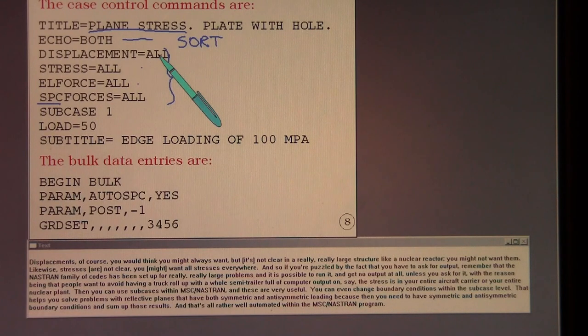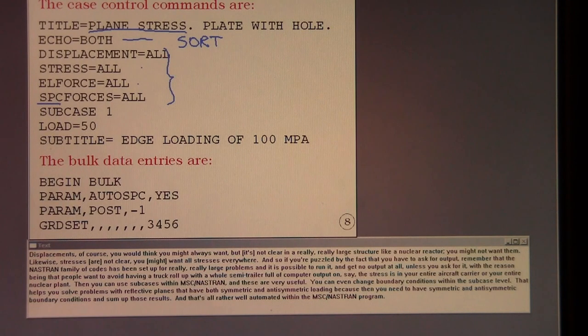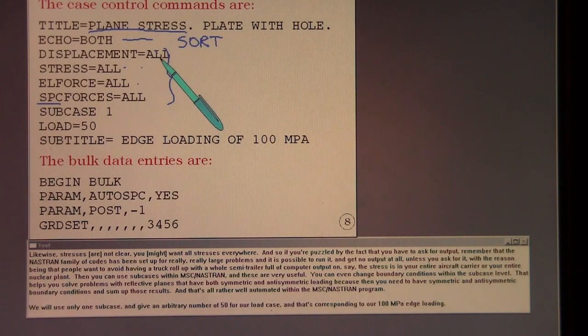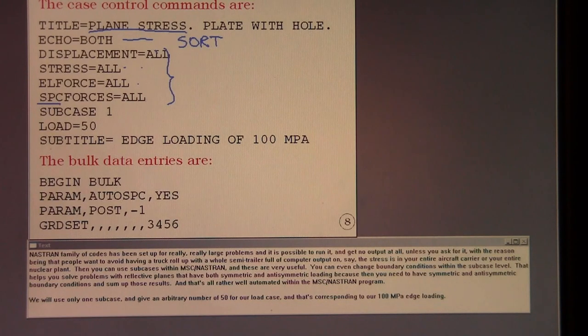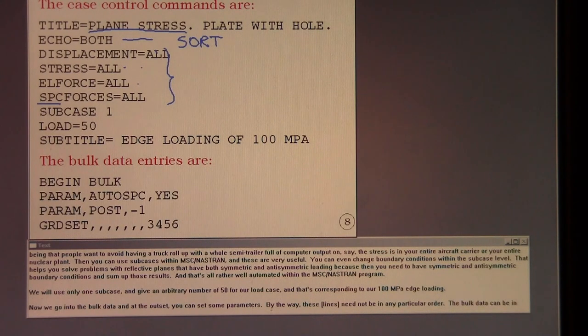Displacements, of course, you would think you might always want, but not clear in a really, really large structure like a nuclear reactor. You might not want them. Likewise, stresses, not clear you want all stresses everywhere. And so if you're puzzled by the fact that you have to ask for output, remember that the NASTRAN family of codes has been set up for really, really large problems. And it is possible to run it and get no output at all unless you ask for it. With the reason being that people want to avoid having a truck roll up with a whole semi-trailer full of computer output on the, say, the stresses in your entire aircraft carrier or your entire nuclear plant.